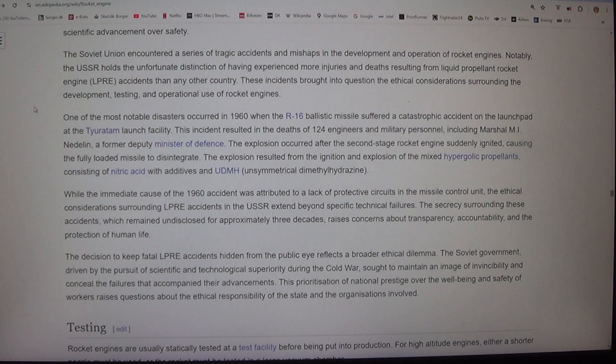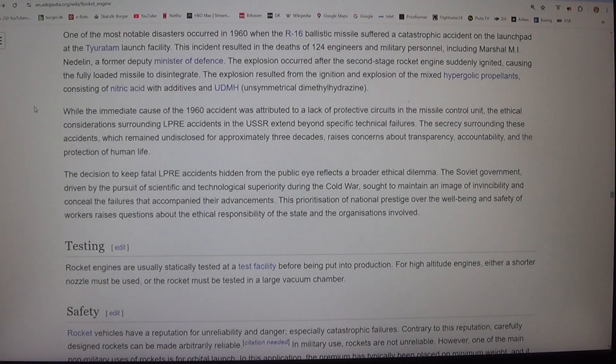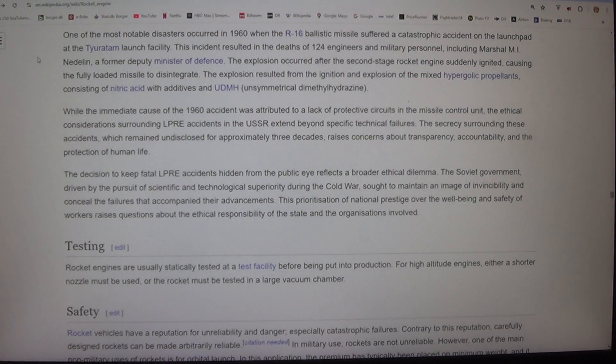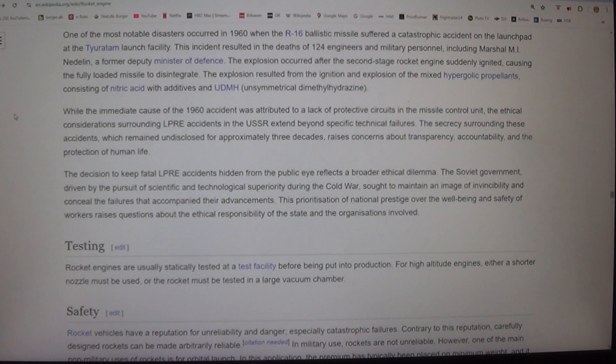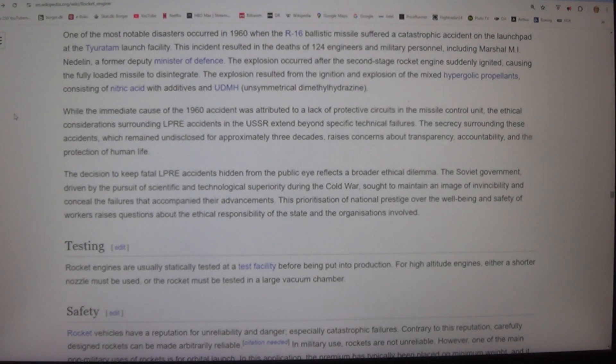One of the most notable disasters occurred in 1960 when the R-16 ballistic missile suffered a catastrophic accident on the launch pad at the Tyuratam launch facility. This incident resulted in the deaths of 124 engineers and military personnel, including Marshal M.I. Nedelin, a former deputy minister of defense. The explosion occurred after the second-stage rocket engines suddenly ignited, causing the fully loaded missile to disintegrate.